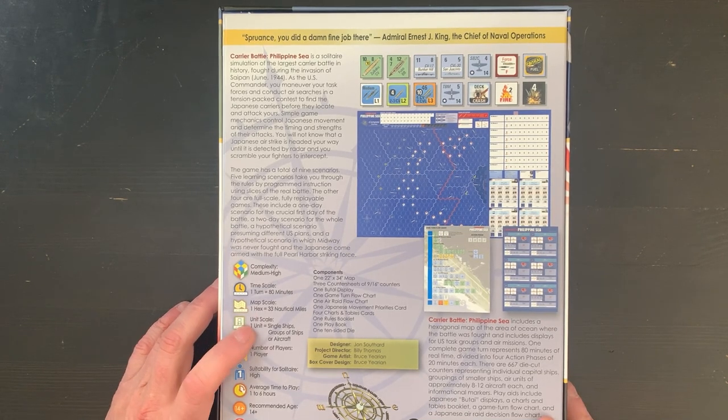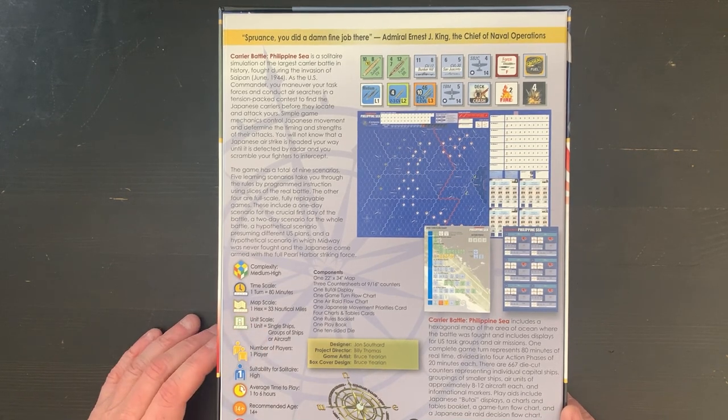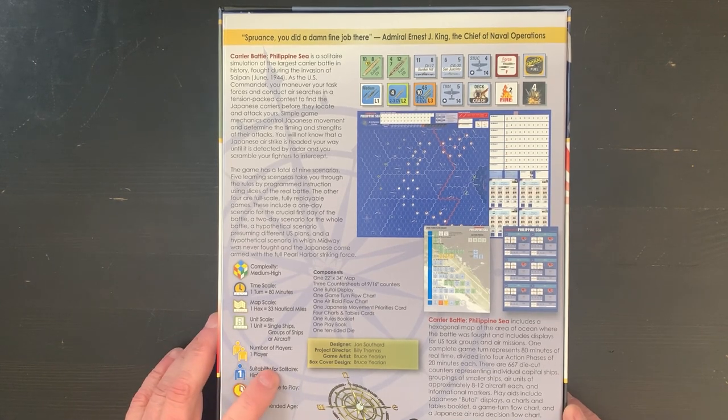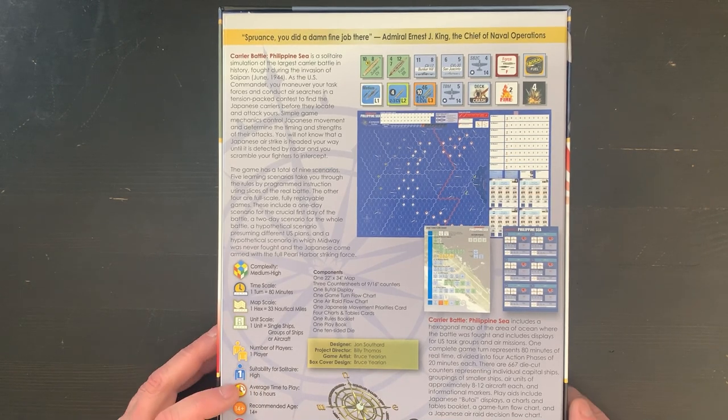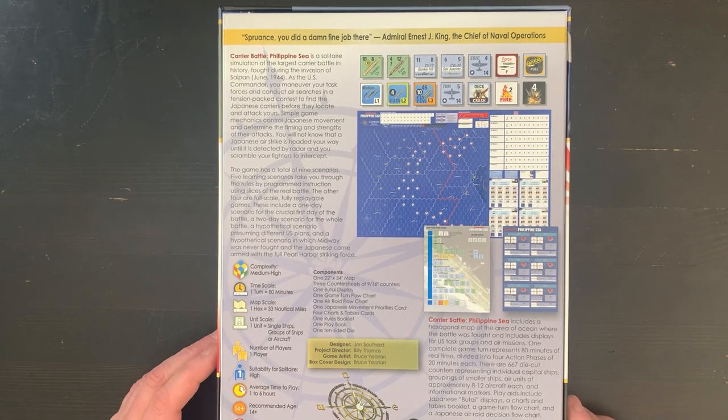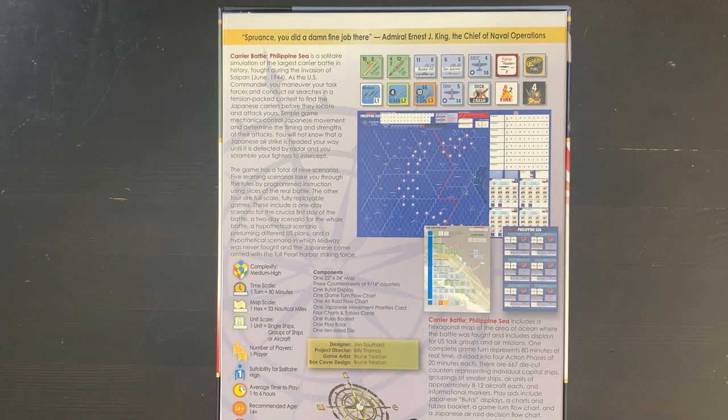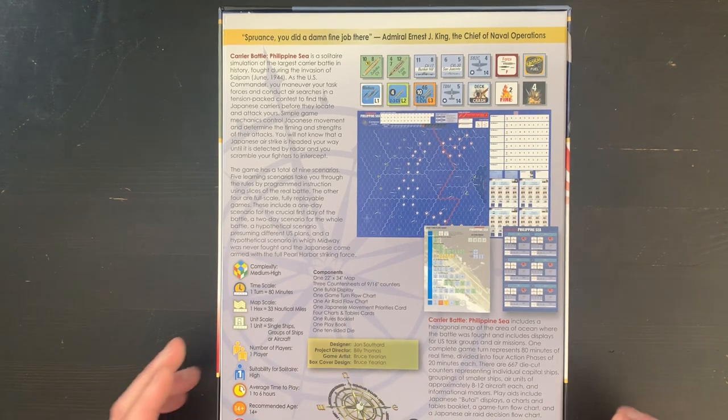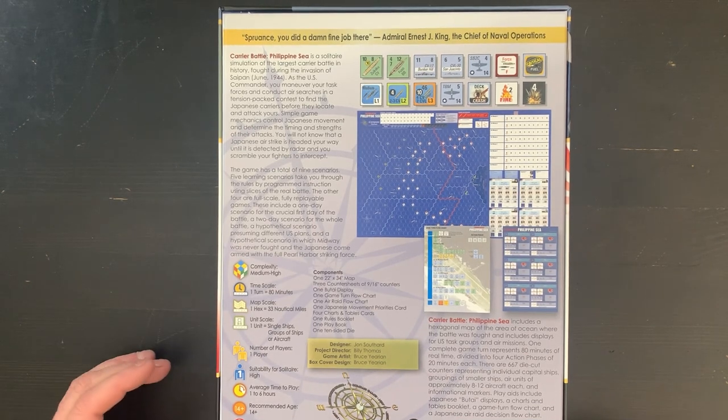Unit scale: one unit single ship, groups of ships or aircraft. Number of players: one. Suitability for solitaire: high, as you might expect. Average time to play one to six hours. Recommended age 14 plus. Game artist and box cover design by Bruce Urian, project director Billy Thomas. Again, the designer is John Southard.